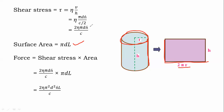We know shear stress and area, so force = shear stress × area. Substituting shear stress (2·η·π·d·N'/c) and area (π·d·L), we get: F = 2·η·π²·d²·N'·L / c. This gives us the viscous shear force.